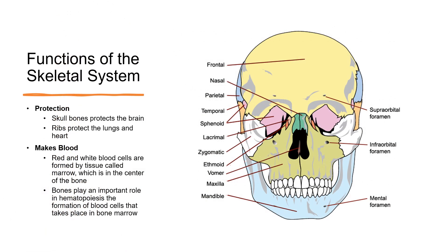Protection is another crucial function of the skeletal system. The skull bones protect the brain, while the ribs protect the lungs and heart. The skeletal system is also involved in blood production. Red and white blood cells are formed by tissue called marrow, which is the center of the bone. This process is called hematopoiesis and bones play an essential role in it.